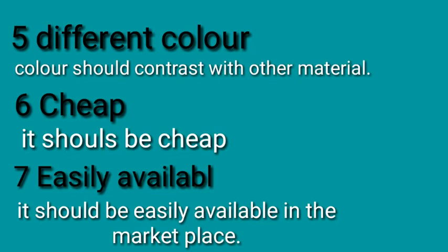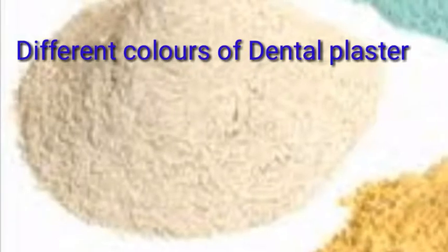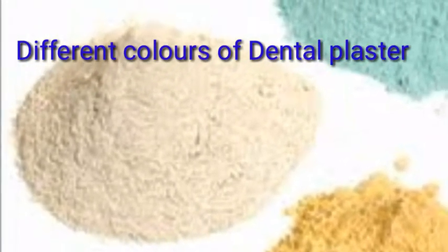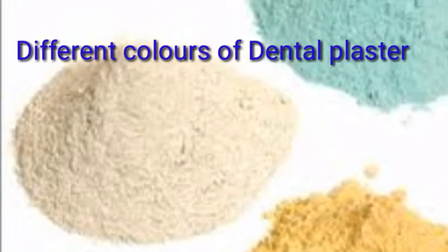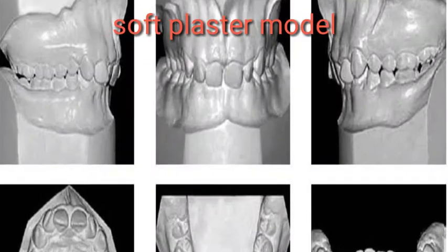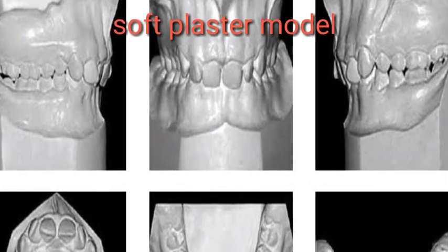Number six, color — it should contrast with other materials. Number seven, cheap and easily available — it should be inexpensive and readily available in the marketplace. We always use dental model materials differently from dental impression materials, and here are some examples of dental materials that can be poured into the impression material as a soft plaster model.